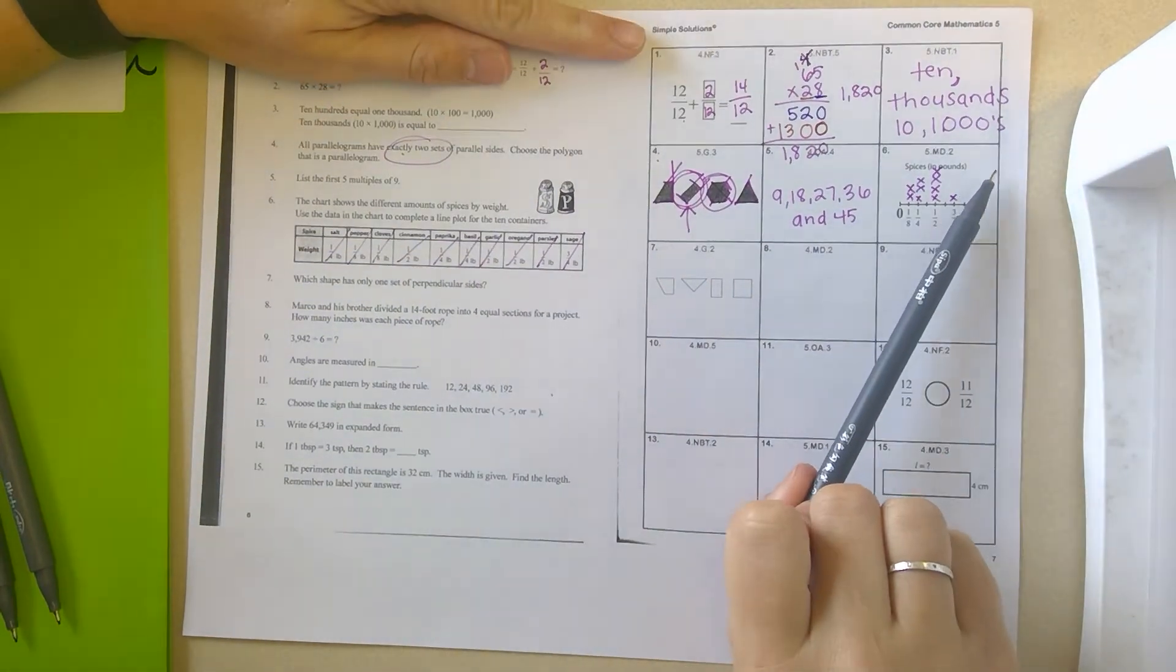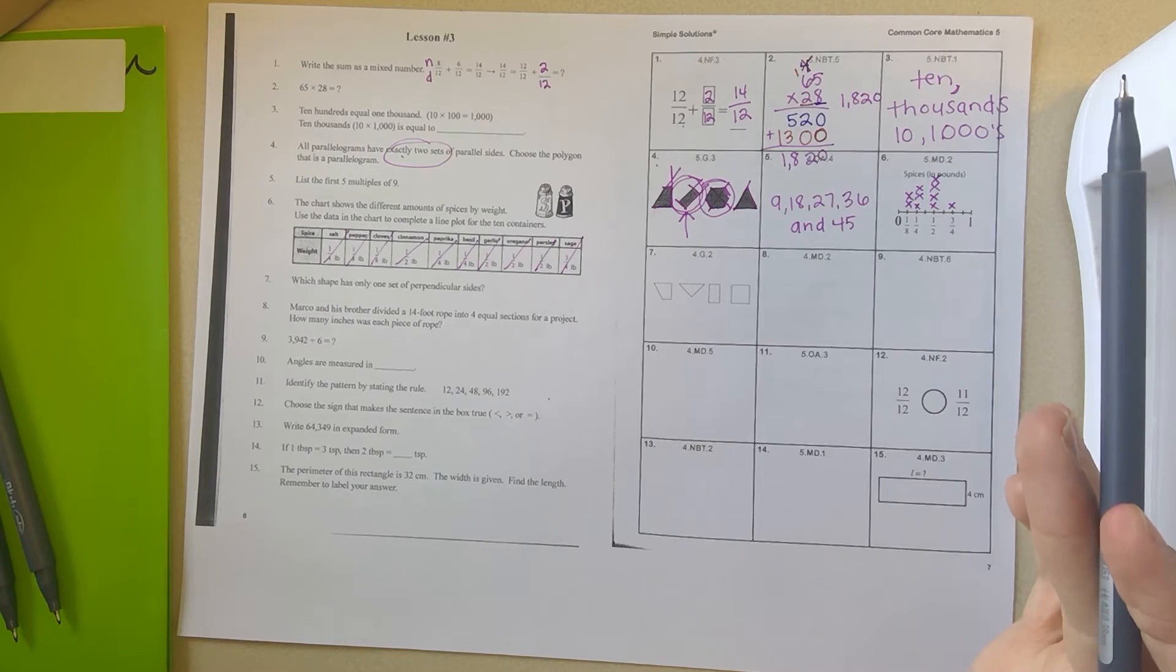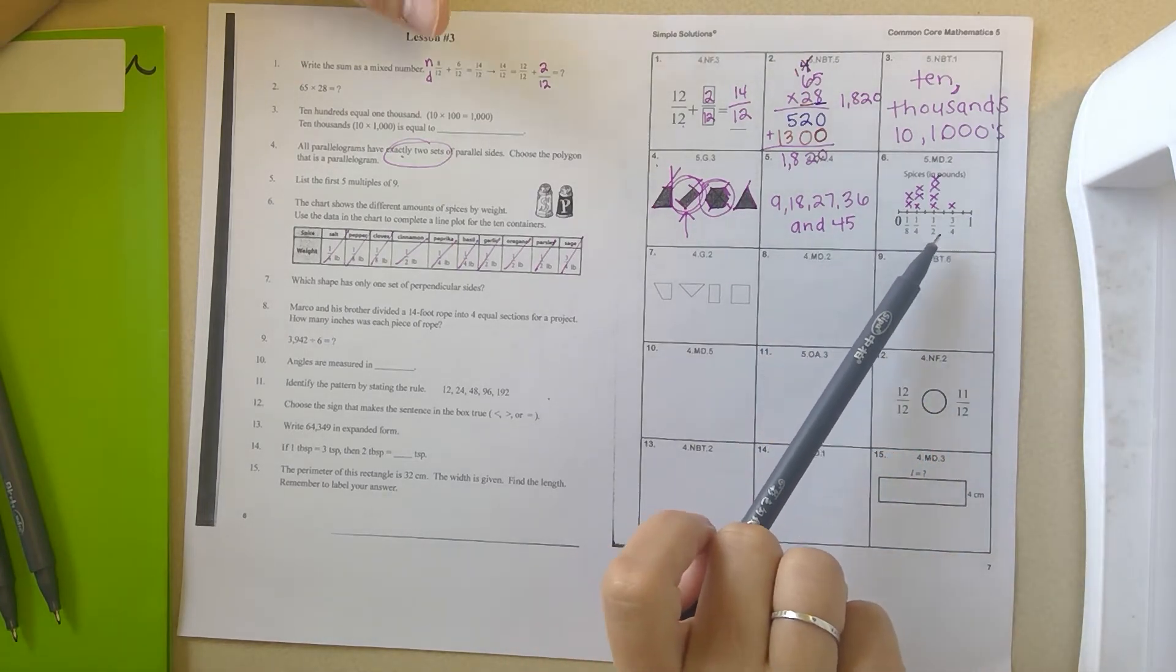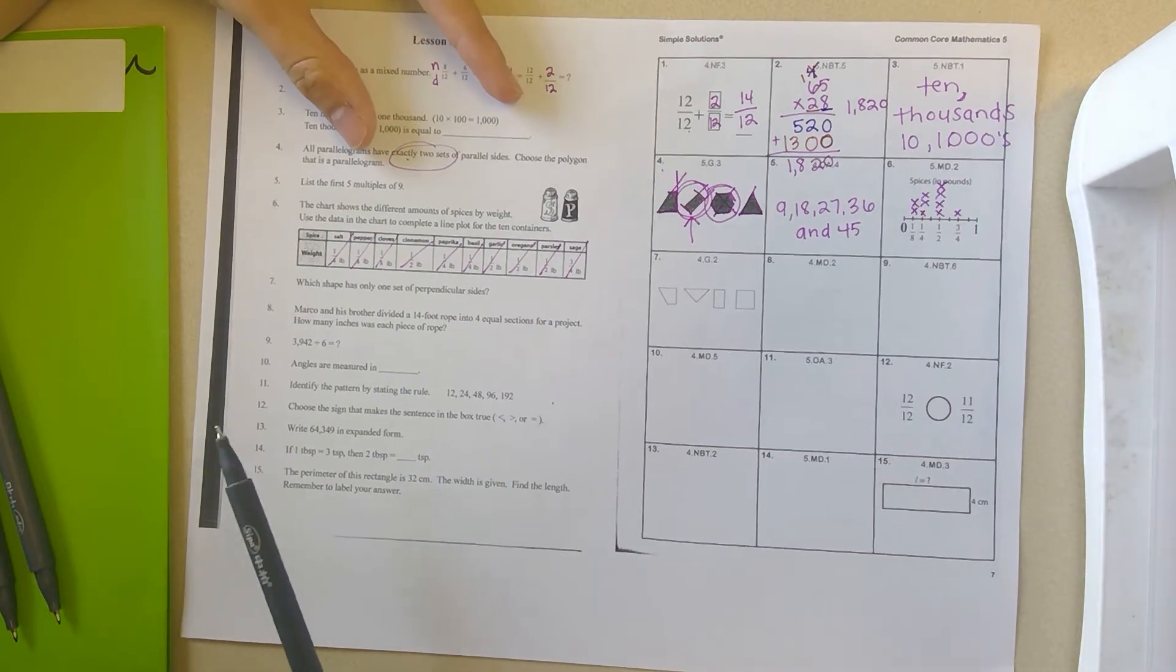So based on this, which one has the most, which pound of spice is the most? It would be the half a pound. And the least would be three fourths.